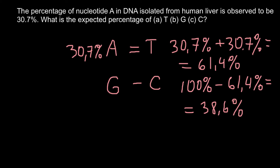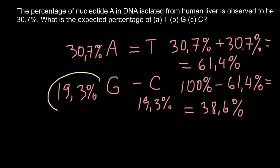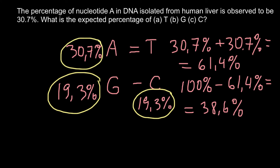Half of 38.6% would be guanine, so guanine is 19.3%, and the other half is cytosine, also 19.3%. These are our answers: guanine 19.3%, cytosine 19.3%, adenine 30.7%, and thymine 30.7%.